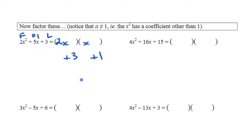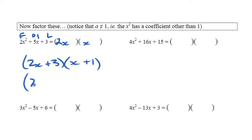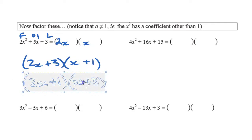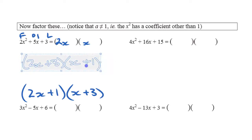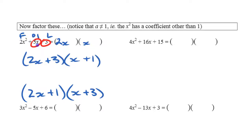If the last term is plus three, it could be three and one or negative three and negative one. Since both are positive, if they were both negative there's no way to get a positive middle term. But since the brackets have different first terms — 2x and x — we have to try both arrangements: 2x plus three times x plus one, and 2x plus one times x plus three, to see which gives the right middle term.